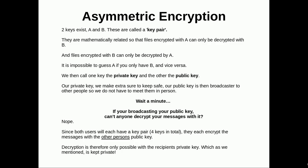Asymmetric encryption: two keys exist, A and B. These are called a key pair. They are mathematically related so that files encrypted with A can only be decrypted with B, and files encrypted with B can only be decrypted by A. It isn't possible to guess A if you have B, and vice versa. We then call one of these keys a private key and the other a public key. The private key we make sure to keep extra safe.